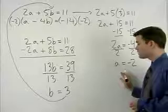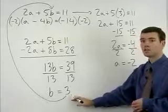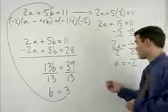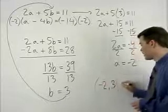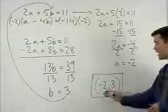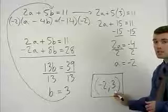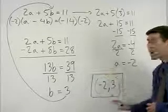Since a equals negative 2 and b equals 3, our answer is the ordered pair negative 2, 3. Notice that a comes before b in our answer. Always put your answer in alphabetical order.